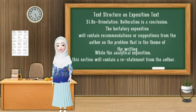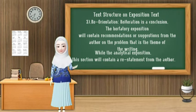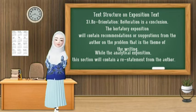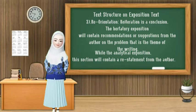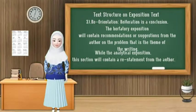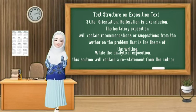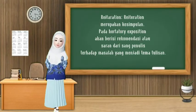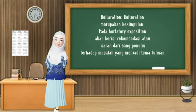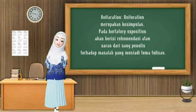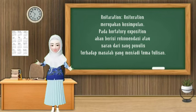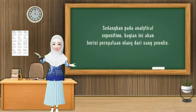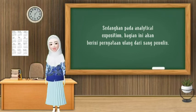For the next structure is reorientation. Reorientation is a conclusion. The hortatory exposition will contain a recommendation or suggestion from the author on the problem that is the theme of the writing. While the analytical exposition, this section will contain a restatement from the author. Reorientation merupakan kesimpulan. Pada hortatory exposition akan berisi rekomendasi atau saran dari sang penulis terhadap masalah yang menjadi tema tulisan. Sedangkan pada analytical exposition, bagian ini akan berisi pernyataan ulang dari sang penulis.